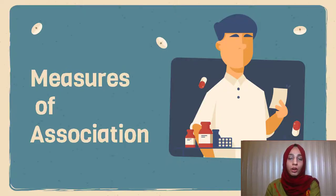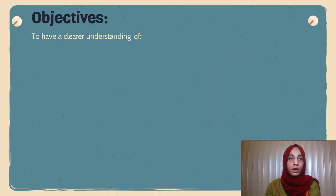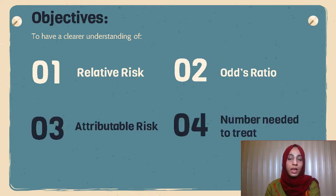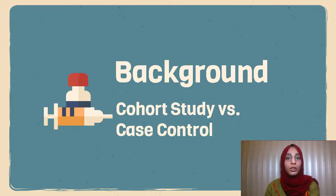In this video, we are going to talk about measures of association. The objectives of this video are to have a clearer understanding of relative risk, odds ratio, attributable risk, and number needed to treat. In order to have a clearer understanding of these terms, it's important to discuss the background — that is the study designs in which these terms will come up.